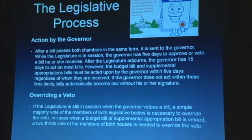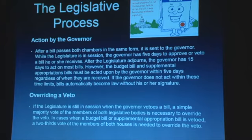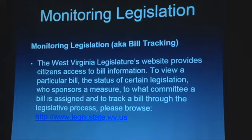If a bill passes both chambers in the same form, it is sent to the governor. The governor has five days to approve or veto it. If he has not acted in 15 days, it can become law without a signature. If he vetoes it, a simple majority vote of the members in both legislative bodies — both the Senate and the House — can override his veto, but it's got to be majority in both.